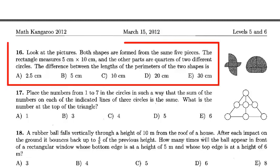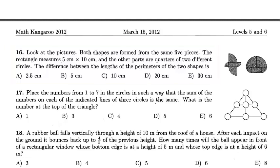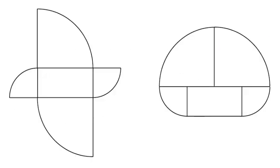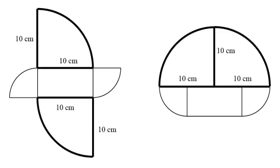Here's problem number 16 from the Math Kangaroo 2012, offered at levels 5 and 6. We're being asked to look at the pictures on the right. Both shapes are formed from the same five pieces. The rectangle measures 5 centimeters by 10 centimeters, and the other parts are quarters of two different circles.